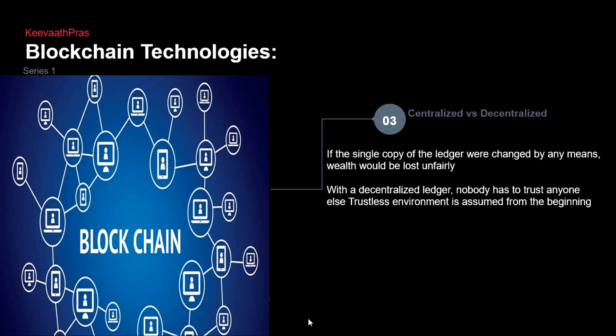We already touched on centralized and decentralized and why we went into distributed. In a centralized system — like banking or a household where a father or mother is the deciding authority — if one person fails, because we are humans prone to errors, the entire thing collapses. In a decentralized system that is not the case: there are multiple owners, not a single authority. If the single copy of the ledger were changed, the wealth would be lost. In a decentralized, it's a trustless environment assumed from the beginning because everybody is their own boss.